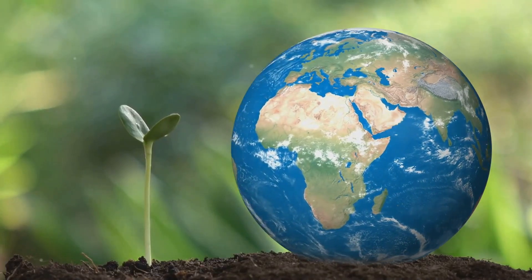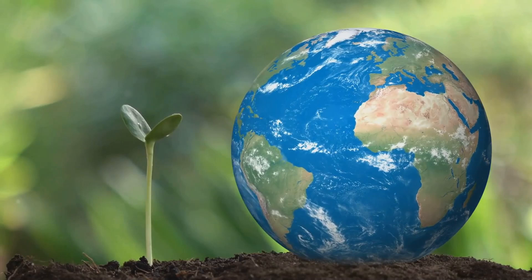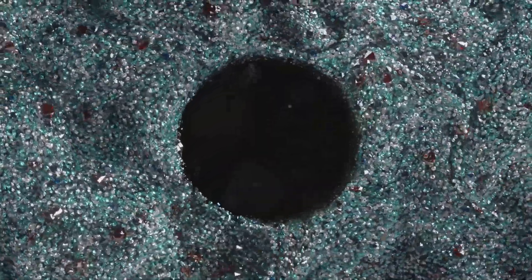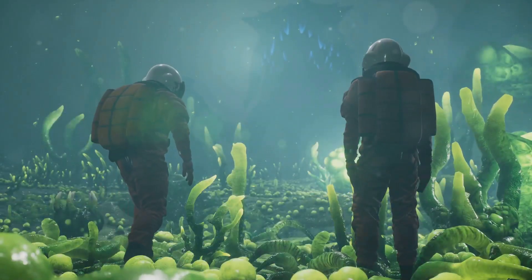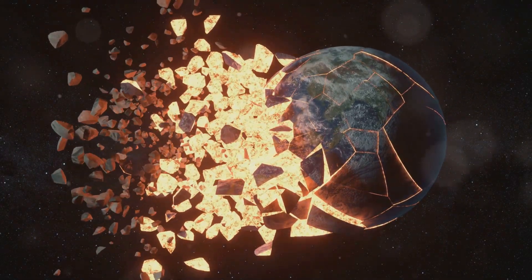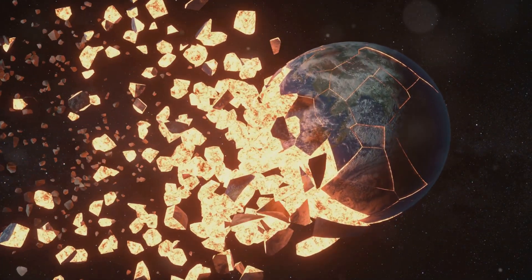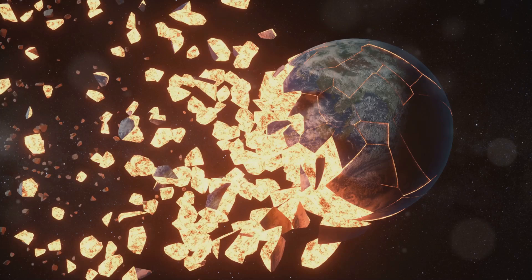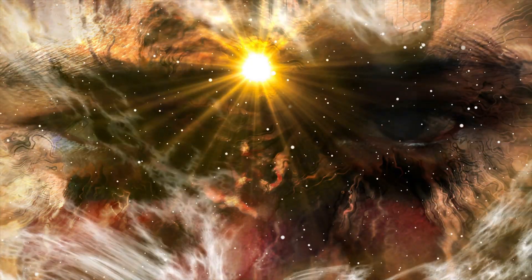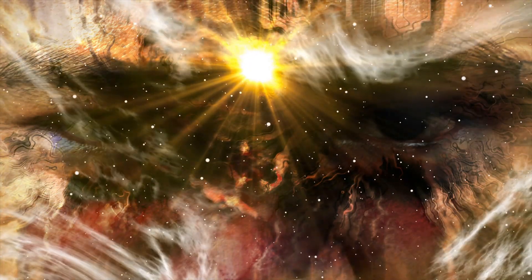These are just a few examples of the delicate balance that makes life on Earth possible. The interplay of these factors creates a harmonious environment where life can thrive. The anthropic principle suggests that this is not just a lucky coincidence, but rather a consequence of the universe's properties. It posits that the universe must have the properties necessary for life, because we are here to observe it. If any of these factors were slightly different, we wouldn't be here to ponder the mysteries of the cosmos. Even minor variations in the fundamental constants of nature could render the universe lifeless.